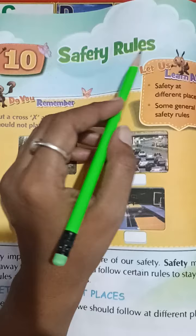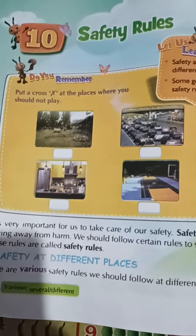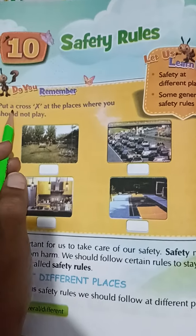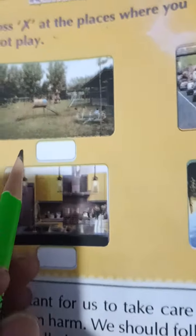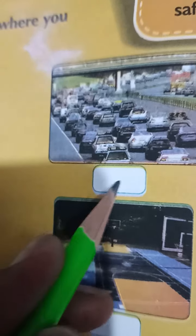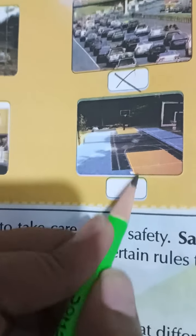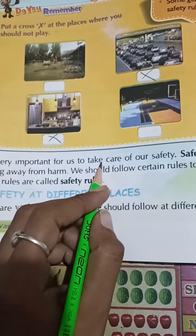The name of the chapter is 'Safety Rules' — rules related to safety that we follow. In this chapter, we will learn about places where you should not play. You cannot play on a traffic road. You can play in the garden and on the sports ground, but not in the kitchen or on the road. Let's start!